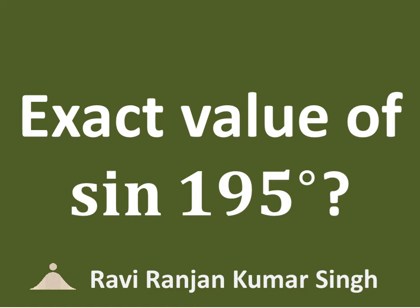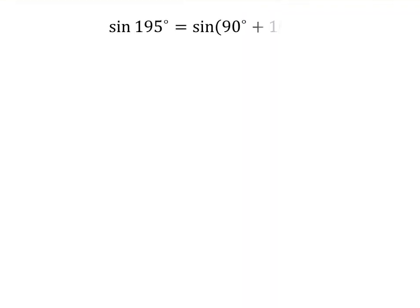In this video, we will learn to find the exact value of sine of 195 degrees. 195 degrees is equal to 90 degrees plus 105 degrees, so sine of 195 degrees is equal to sine of 90 degrees plus 105 degrees.